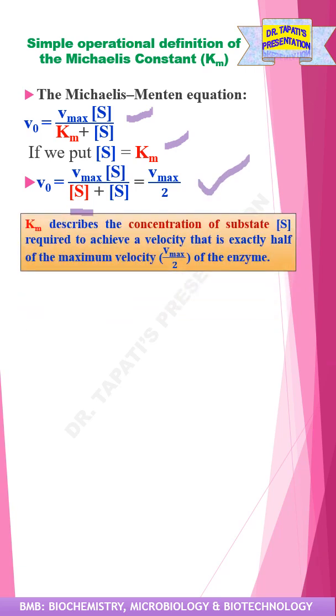So we can say that Km describes the concentration of substrate required to achieve a velocity that is exactly half of the maximum velocity of the enzymatic reaction.